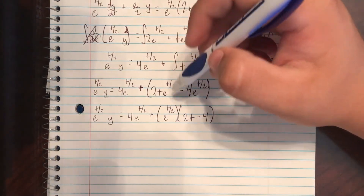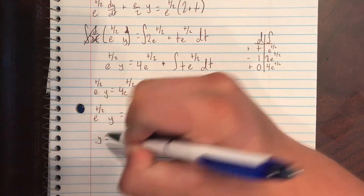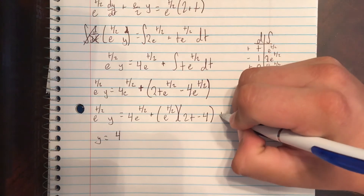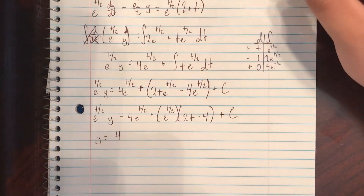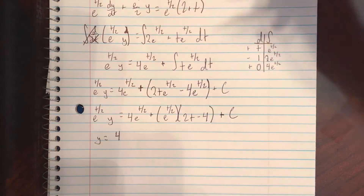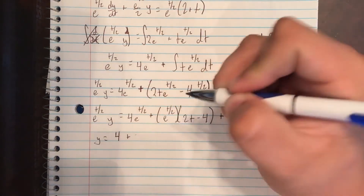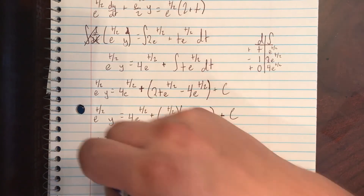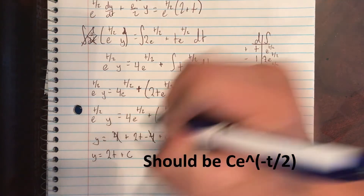We can actually divide by e to the t over 2 now, which cancels that, so it's going to be 4. We can't forget the plus c also. So the e to the t over 2s cancel on both sides, giving us 4 plus 2t minus 4 plus c. And then we'll cancel these 4s out, which gives us 2t plus c.